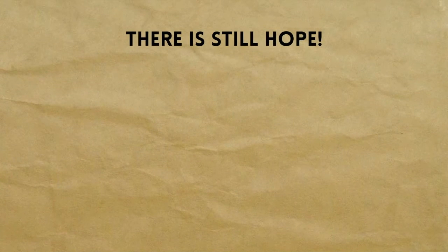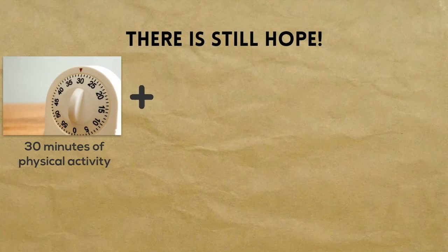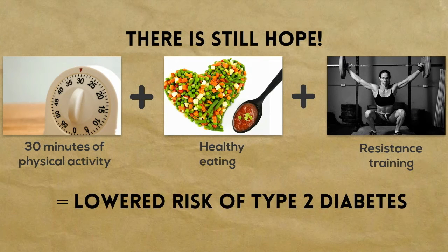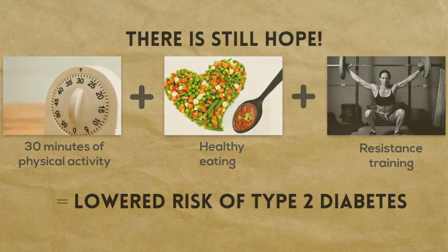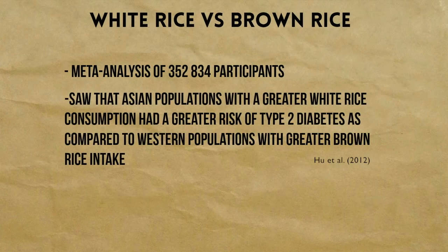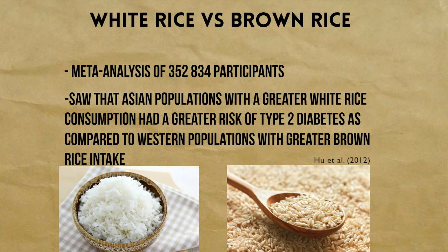To lower the risk of type 2 diabetes, one must live a healthy and physically active lifestyle. Being physically active for at least 30 minutes a day can control your weight and reduce your body fat. Further, resistance training can improve glycemic control and diabetes. In studies of Asian populations, it is seen that increased intake of white rice is associated with increased risk of type 2 diabetes, so substituting brown rice for white rice can offer many more nutrients and can actually lower your risk of diabetes.